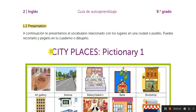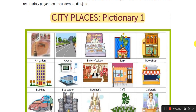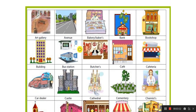And in the presentation, we have this: City Places Pictionary. Cuando nos dicen pictionary, la idea es que tengamos el dibujito y la palabra. Pero como yo ya sé que se hace muy complicado, podemos hacer nada más palabra in Spanish and palabra in English. Por ejemplo: art gallery — galería de arte, avenue — avenida, bakery — panadería, bank — banco, bookshop — librería. Así lo pueden ir poniendo ustedes.